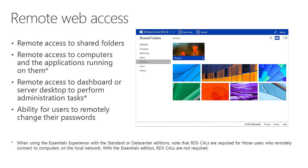You have other options to connect remotely to computers, discussed in the seventh module in this series — the User Experience module. You can also establish a VPN connection from a remote computer to the server, allowing you to use RDP directly to connect to a remote PC. There are different pros and cons to each approach, and you can choose based on the needs of the business and user. You can also access the dashboard remotely through the RWA portal to perform administrative tasks, and end users can change their own password remotely using the RWA portal.